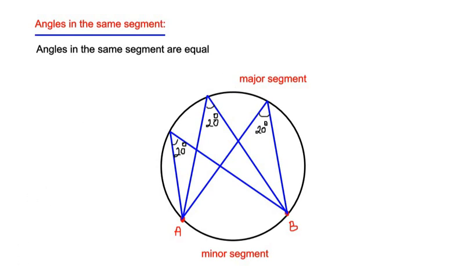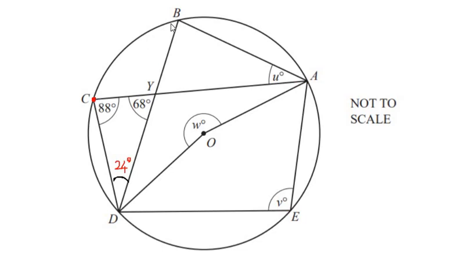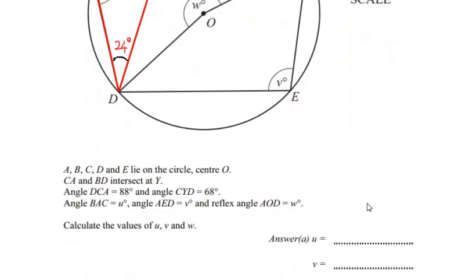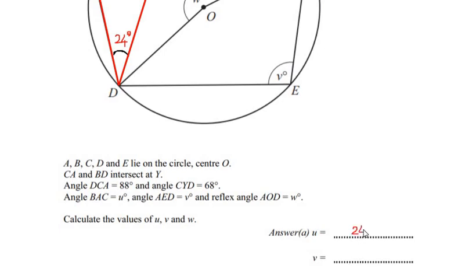Applying this theorem to the given example: considering points C and B, they divide the circle into a minor and a major segment. Points D and A both form angles in the major segment. Since angles in the same segment are equal and angle D is 24 degrees, we get angle BAC, which is u, equal to 24 degrees.